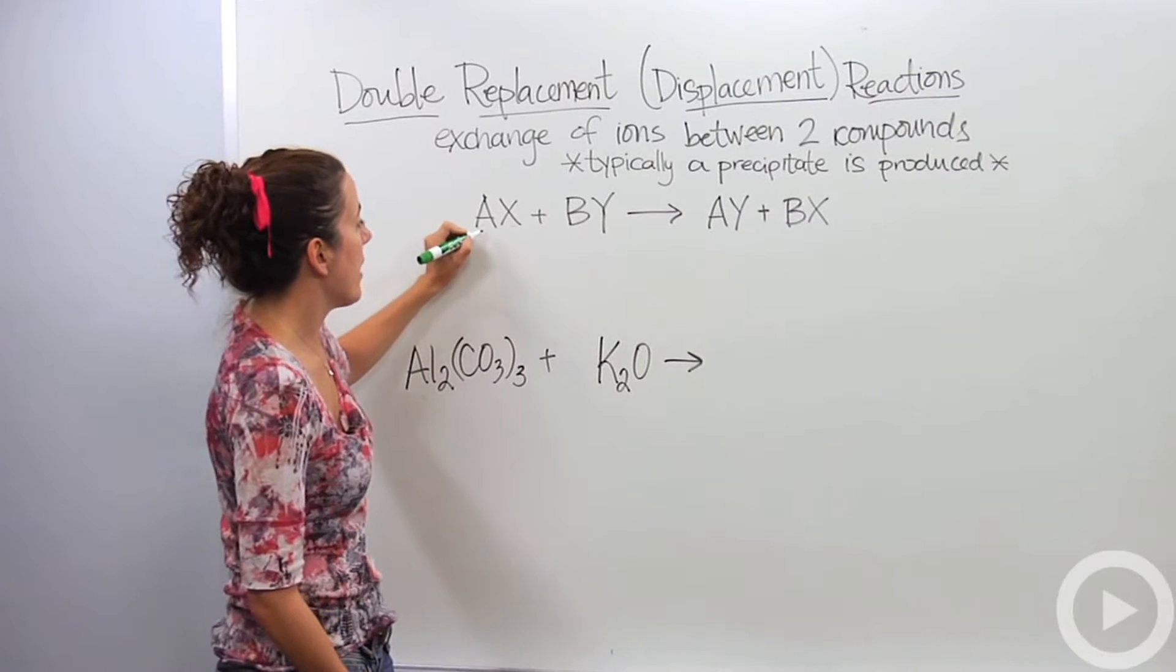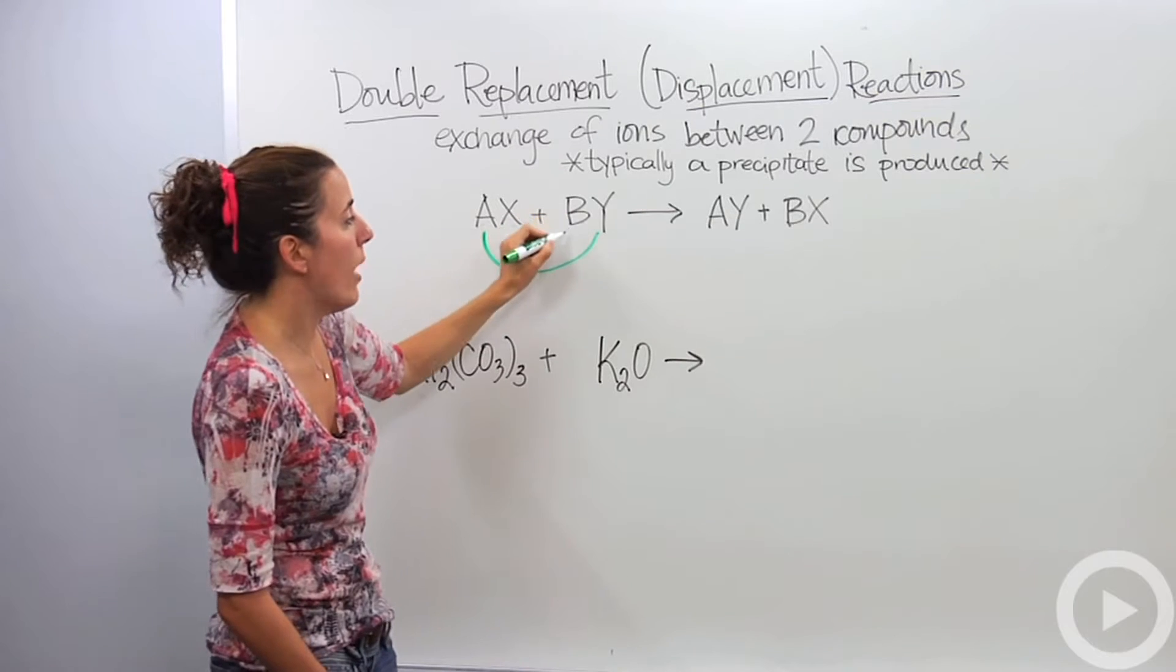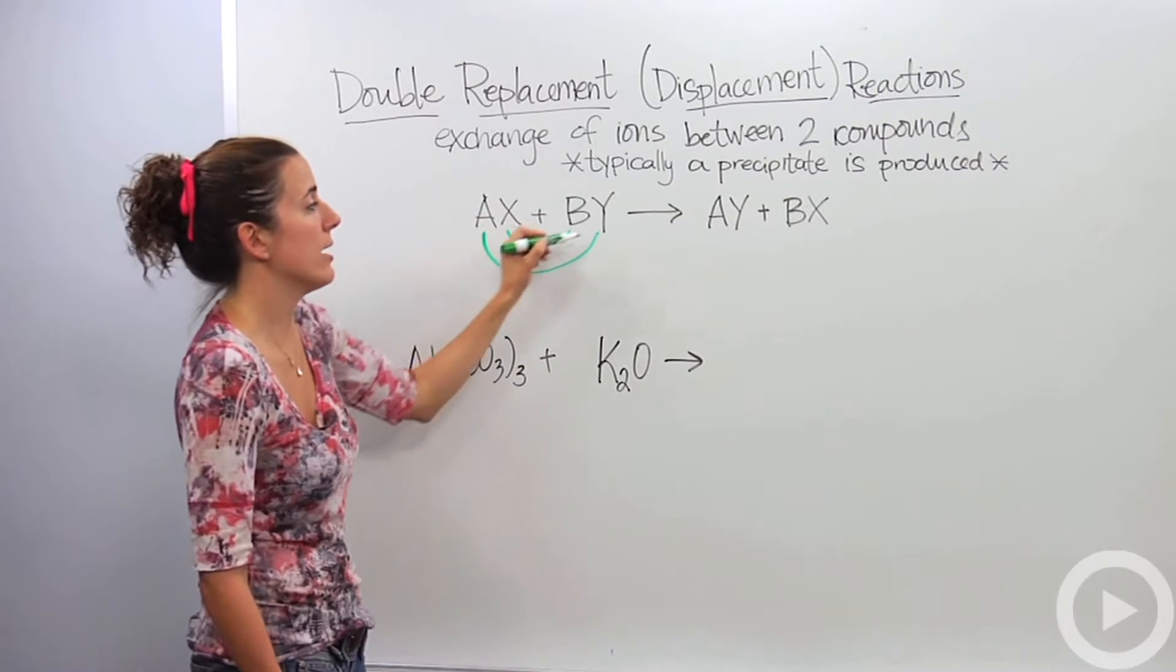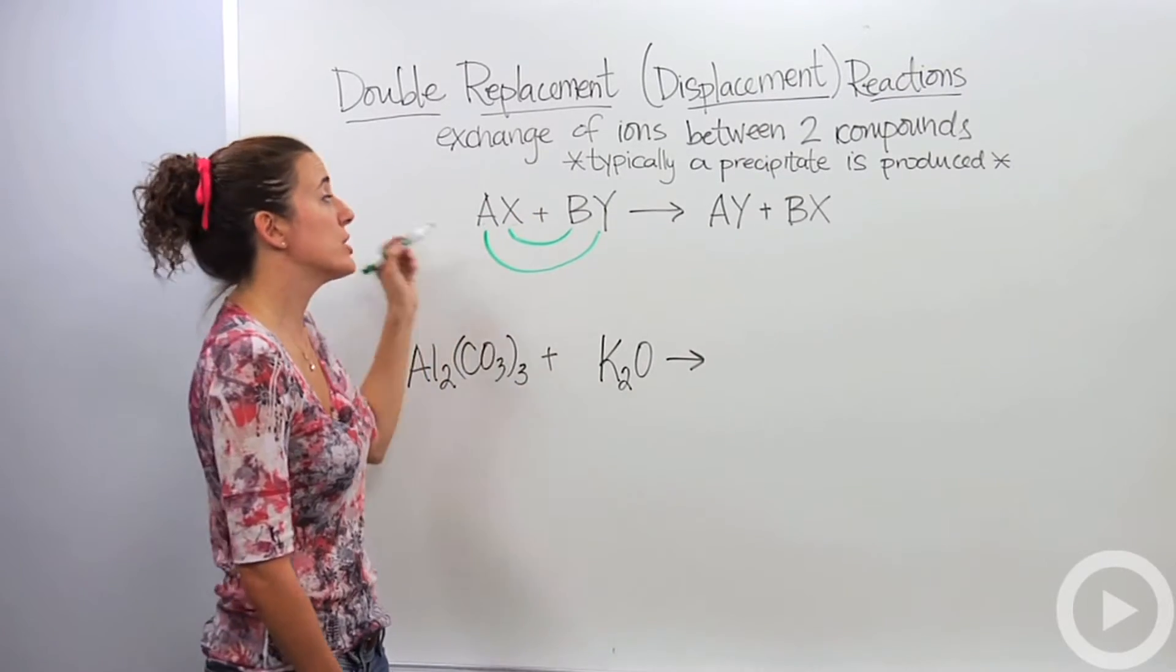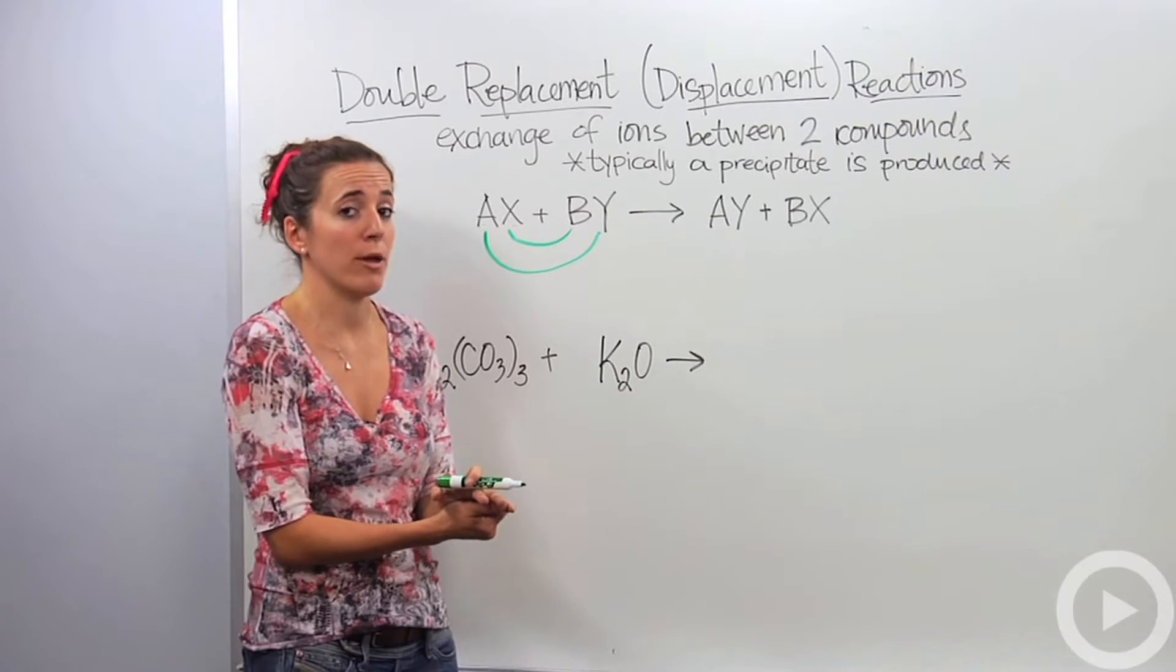So the A is now not going to be with X anymore, it's now going to be with Y. And the B is not going to be with Y anymore, it's now going to be with X. An easy way to remember this is the outside ions are going to come together and the inside ions are now going to come together. But don't forget, metals will always, always, always come first.